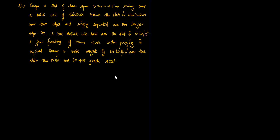Design a slab of clear span 5.2 meter by 7.5 meter resting over a brick wall of thickness 300 mm. The slab is continuous over three edges and simply supported over one longer edge. Use IS code method. The live load over the slab is 6 kilo Newton per meter square. A floor finish of 120 mm thick waterproofing is applied having a unit weight of 18 kilo Newton per meter cube over this slab.